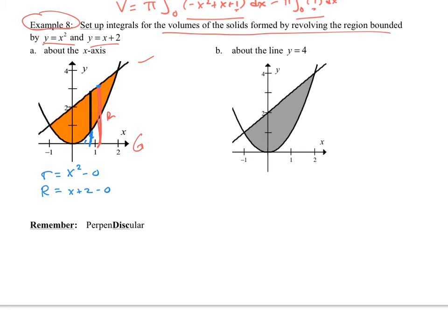You can ignore the zeros if you wish. Well, you should. It's fine. And so there's my big r, little r.